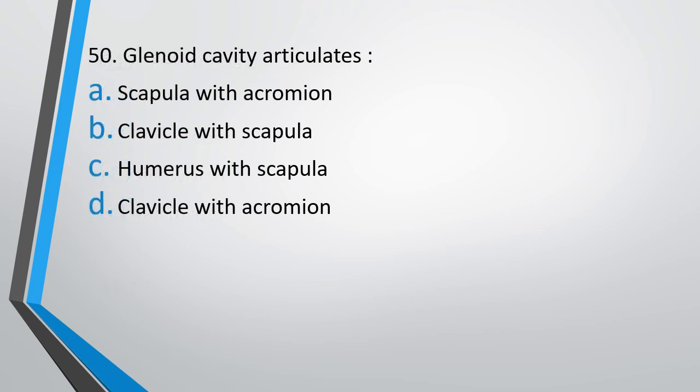Question number 50. Glenoid cavity articulates scapula with acromion, clavicle with scapula, humerus with scapula, or clavicle with acromion. The correct answer is option C, humerus with scapula. Glenoid cavity is the cavity that is found in scapula that holds the humerus for the ball and socket joint of the shoulder.